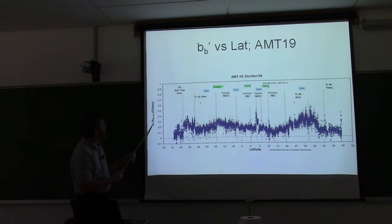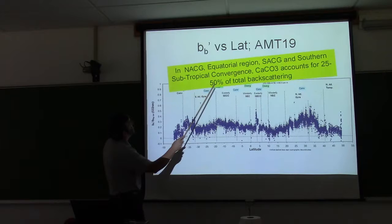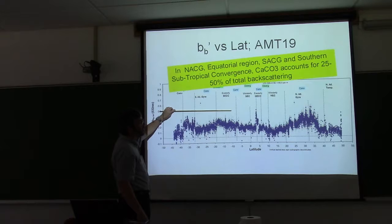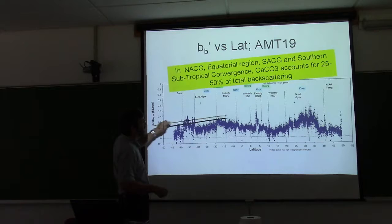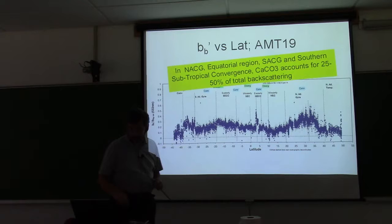The BB-prime factor measured along track, normalized to the total backscattering — which goes from zero to one — in the gyres is 25 to 50%. That is, 25 to 50% of that scattered light is associated with acid labile backscattering or calcite scattering, in both the South Atlantic gyre and the North Atlantic central gyre. So really in the gyres, even though the concentration of PIC is low, it is very optically active and contributes significantly to the radiance.